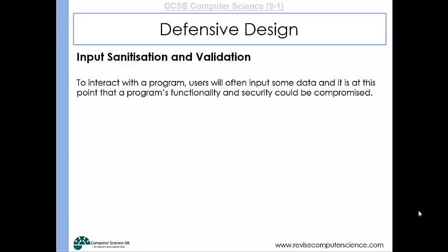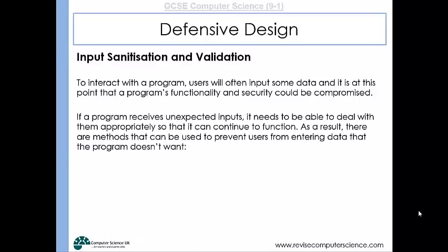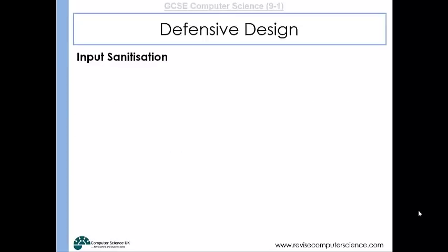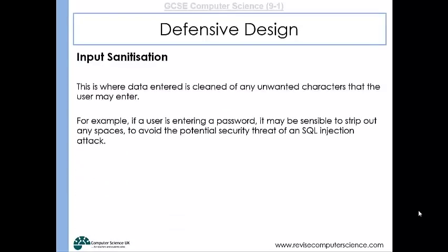To interact with the program, users will input data, and it's at that point that there could be a problem — because it might be that the user enters some data that the program can't deal with properly. There are some methods we can use to prevent users from entering data that the program doesn't want. They are input sanitization and input validation. Input sanitization is where data that is entered is cleaned of any unwanted characters. So when entering a password, it might be sensible to strip out any spaces so that we can't have any security threats from an SQL injection attack.